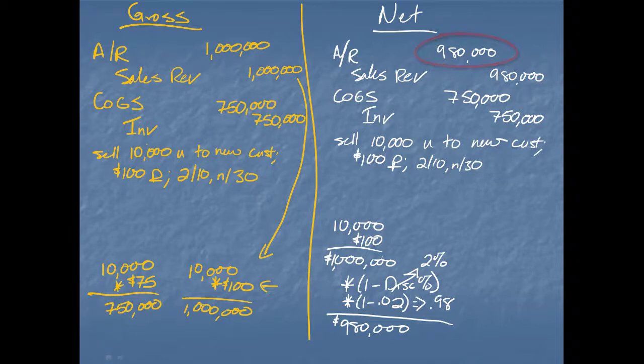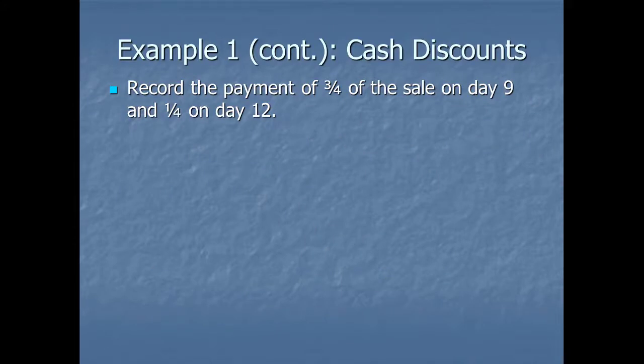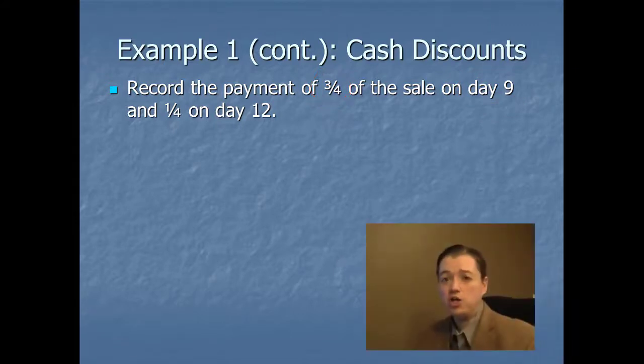Now let's go ahead and take a look at what happens when they make their payments. We're going to assume that Jones sent us two checks. They sent us one on day 9, so within the 10-day period, and they paid three quarters of their account off with that check. Now, whether or not we offer a discount on a partial payment depends on the company, but most companies, especially now, do allow a partial discount on whatever portion you pay within the window. It's just good business, and it keeps people from being frustrated. They've made an effort to make some payment now.